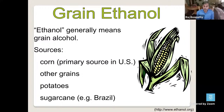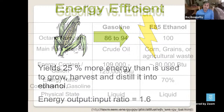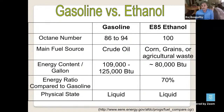Grain ethanol in the US comes mostly from corn; in Brazil they use sugarcane; other grains and potatoes are also sources — any starch material can be used. It's 25 percent more energy efficient than the energy used to grow, harvest, and distill it, giving an energy output-to-input ratio of 1.6. If you compare gasoline with ethanol, the octane number for E85 at 85 percent ethanol is 100, compared to gasoline's 86 to 94.